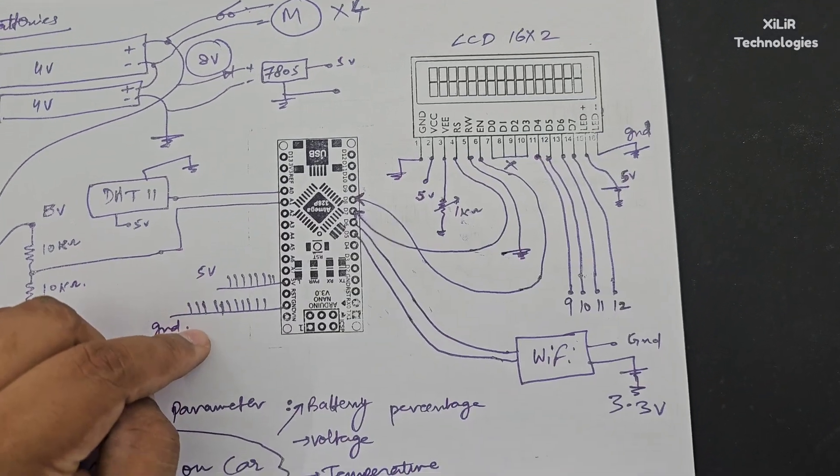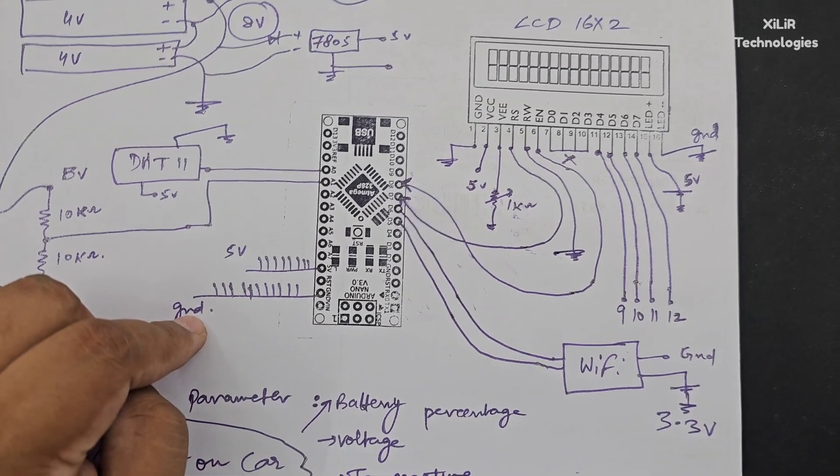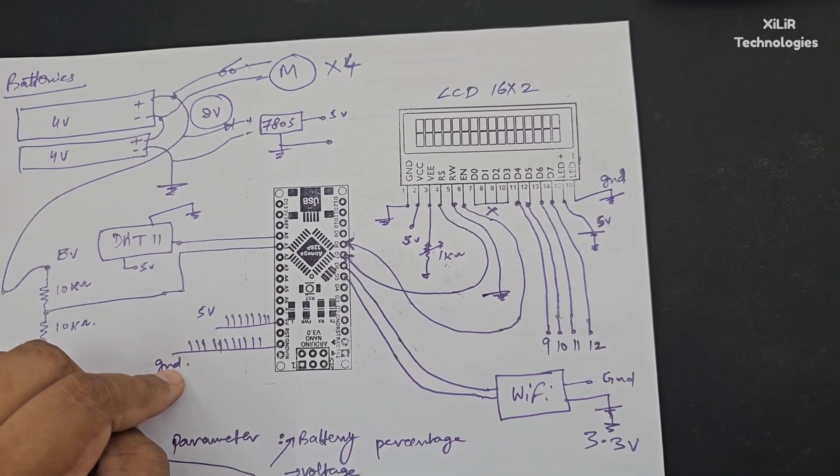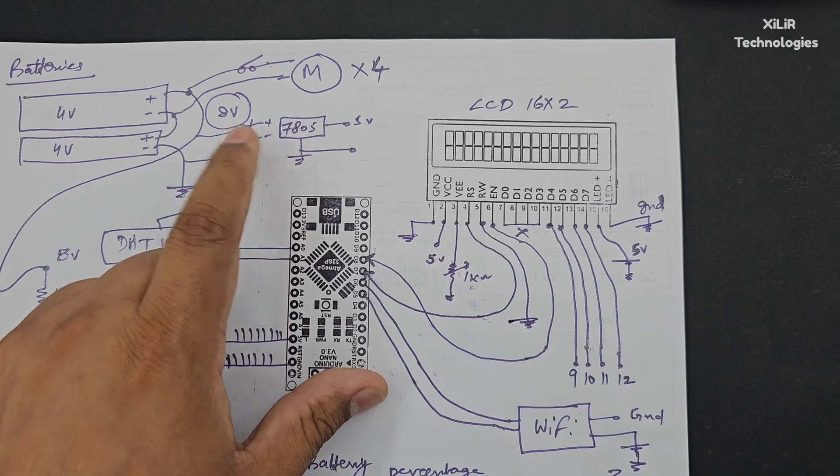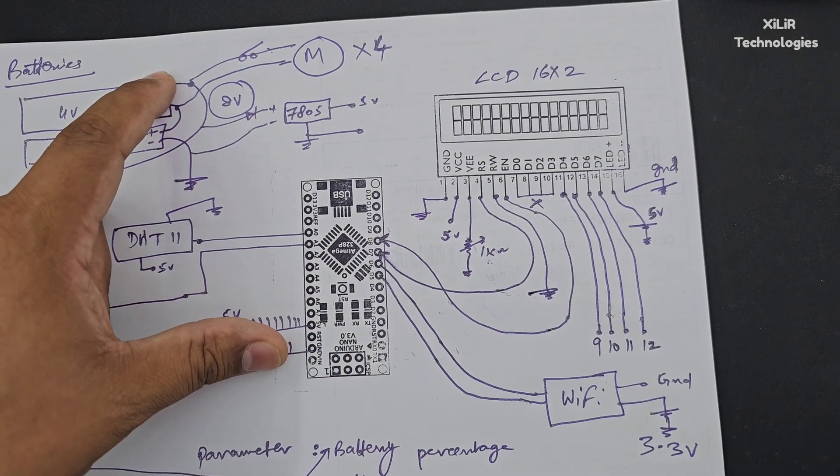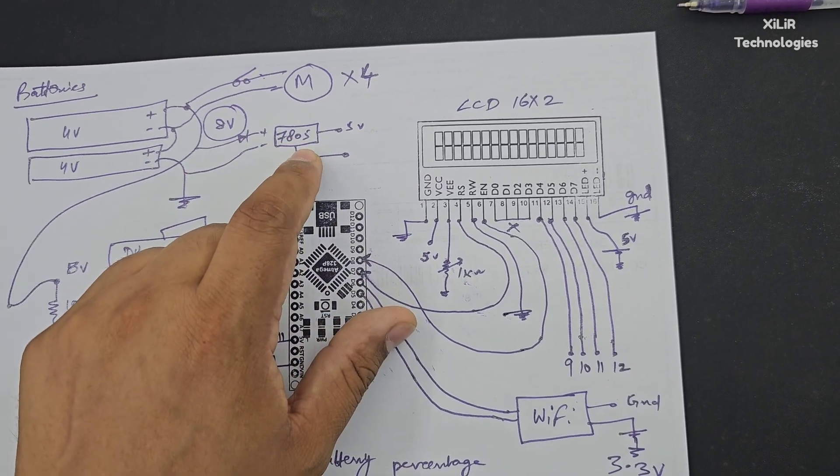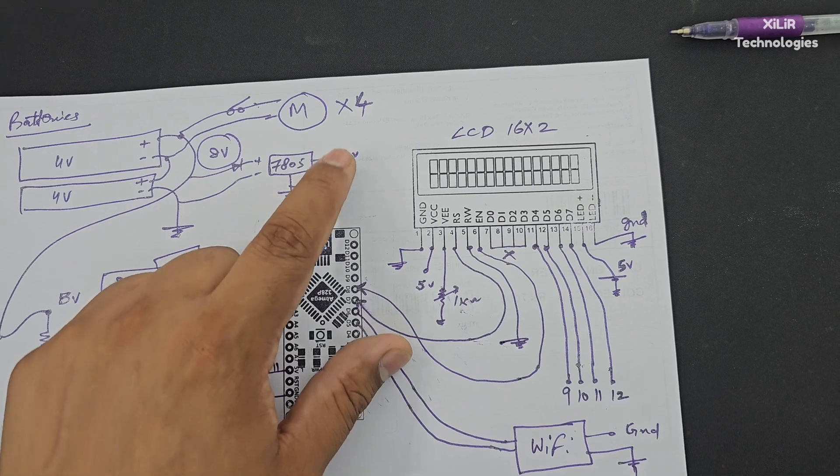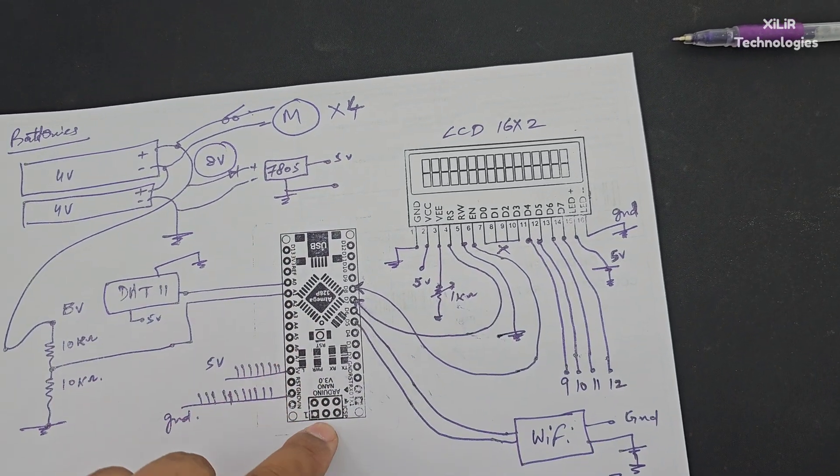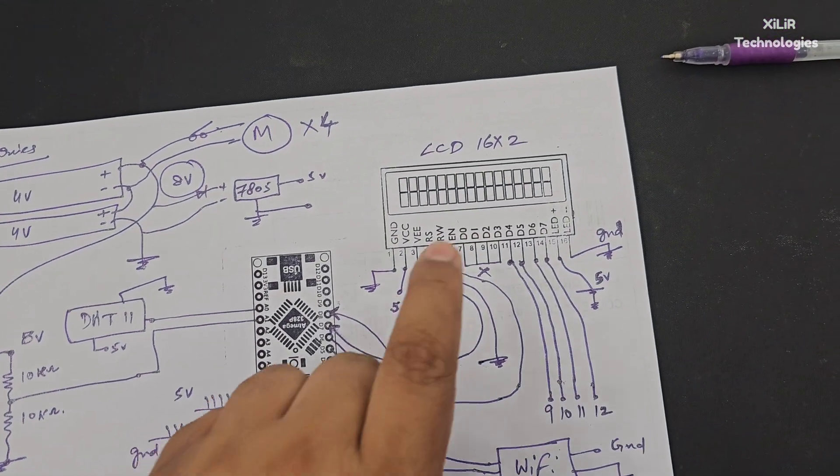This is the ground and then 5 volt. You can connect wires here for power supply. For taking 5 volt we are using this. These batteries will create 8 volt and then regulate 5 volt using this IC, and this 5 volt will turn on the Arduino Nano and LCD also.